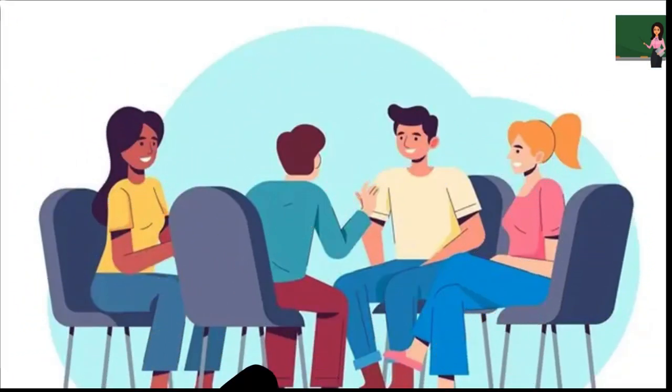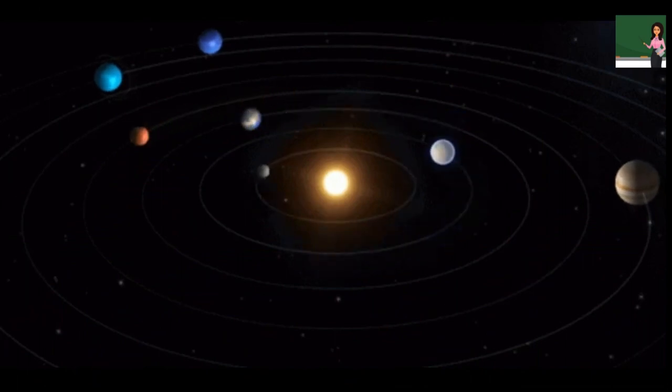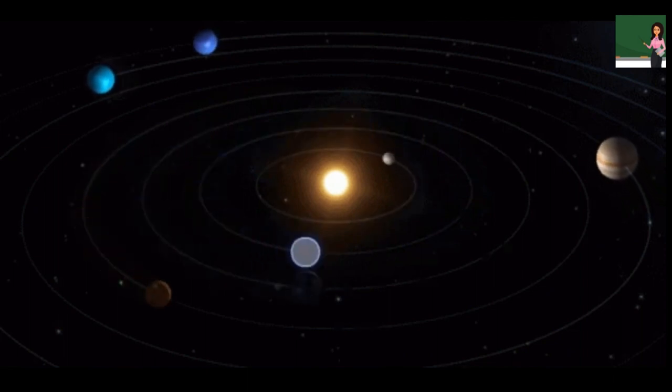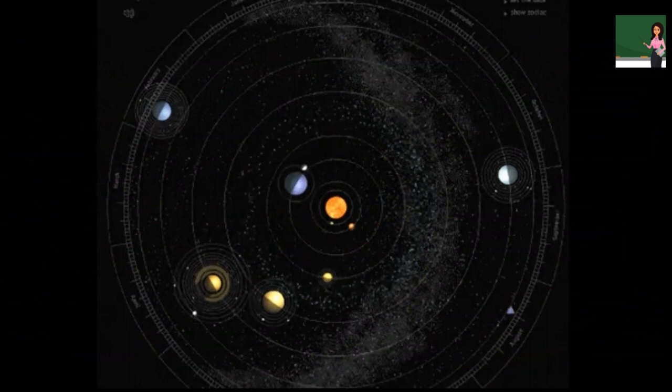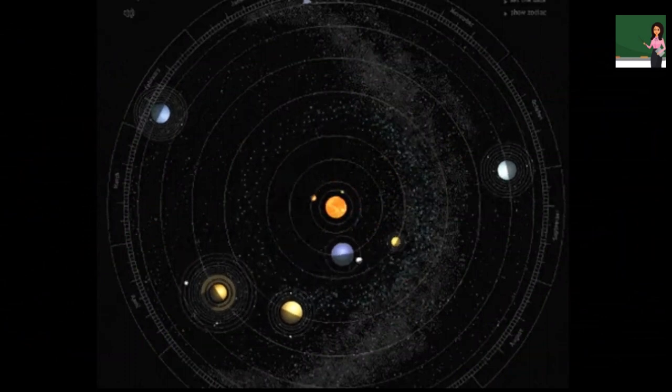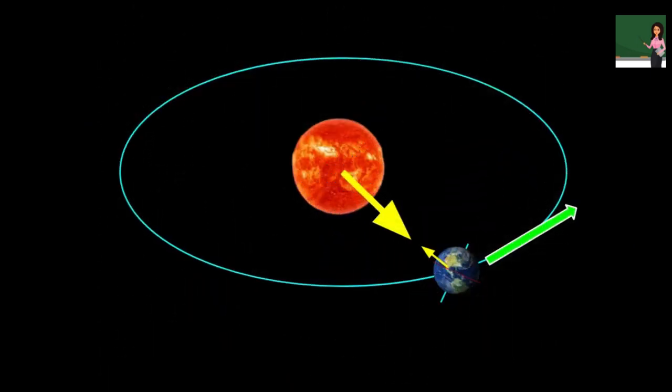The gravitational force operates between the sun and the planets in the solar system. Because of this, the planets revolve around the sun. At the same time, gravity also operates between planets and their satellites. Then why don't all the planets and satellites fall towards the sun?